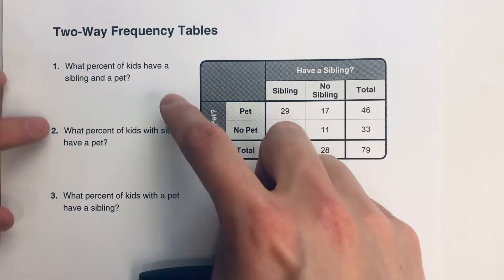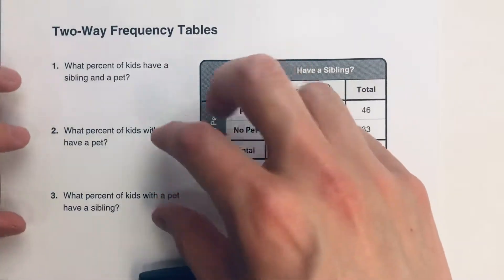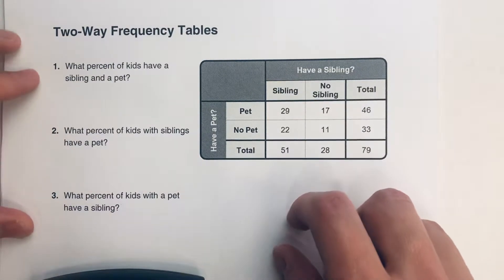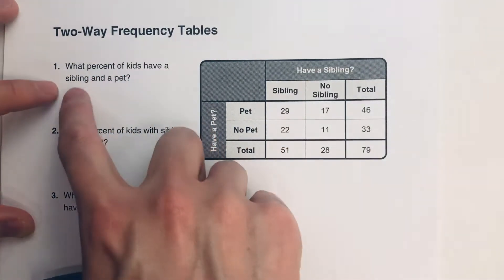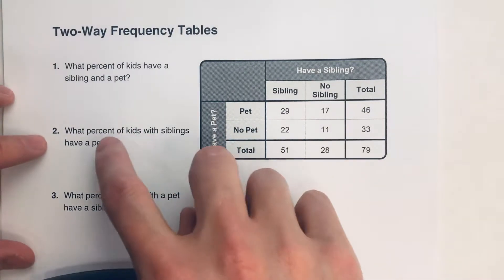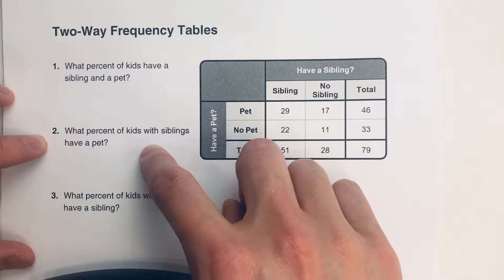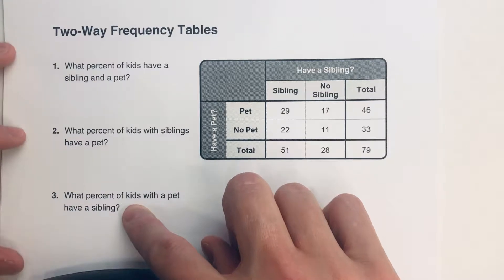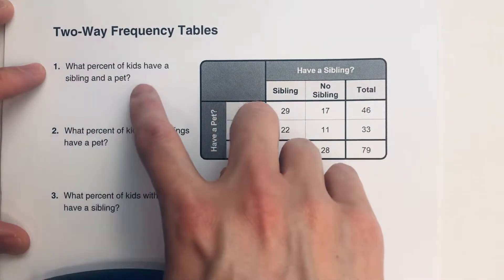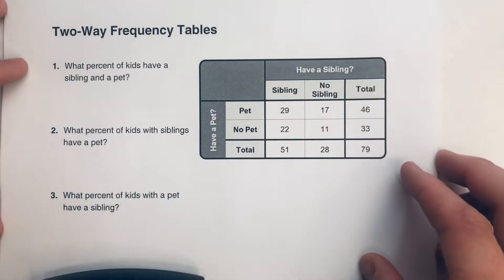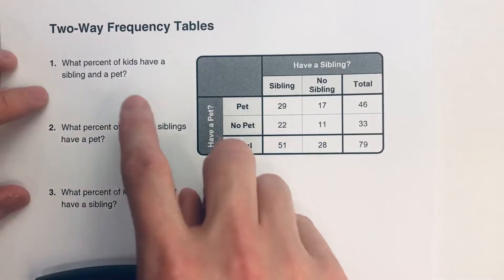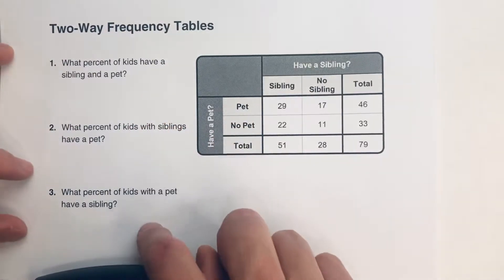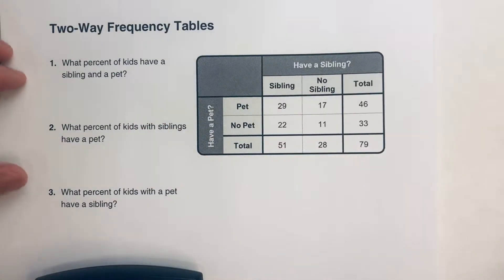The three questions we're going to answer about this two-way table are very similar, and if you don't read them carefully, they almost seem like the same question. The first: what percent of kids have a sibling and a pet? Second: what percent of kids with siblings have a pet? Third: what percent of kids with a pet have a sibling? They're different questions because when we calculate percents, we need to know what's the part and what's the whole — and in each scenario, the whole is different.